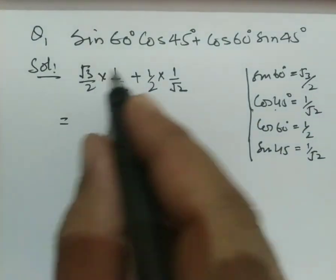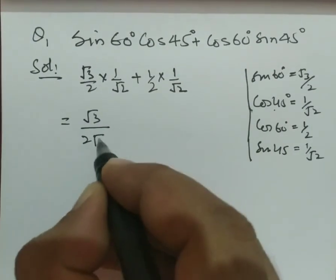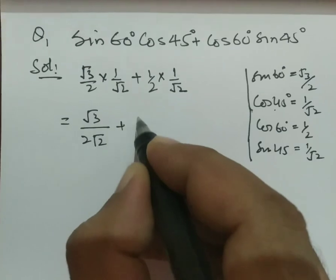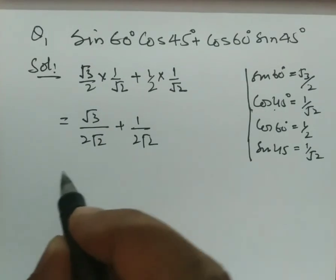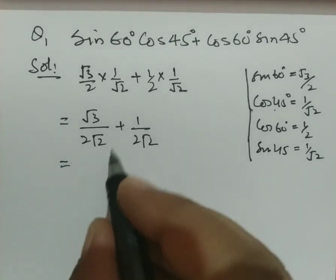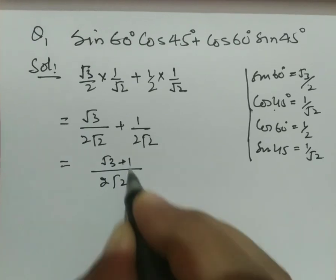Now multiply this and this, so root 3 over 2 root 2 plus 1 over 2 root 2. Similarly, take the common, so 2 root 2 and root 3 plus 1.